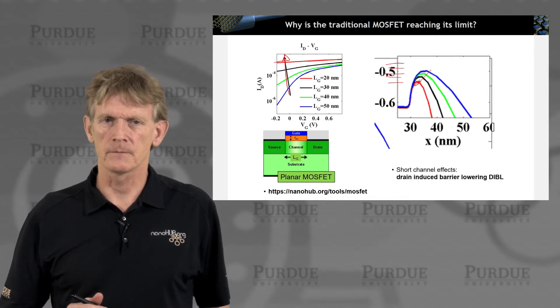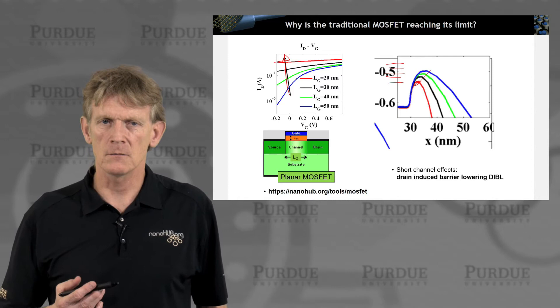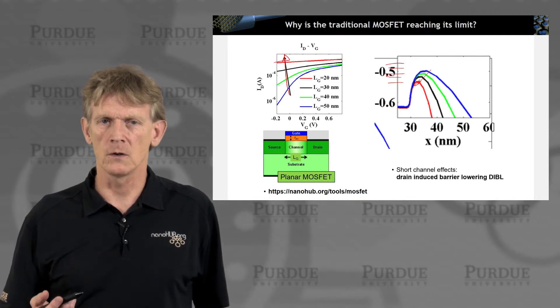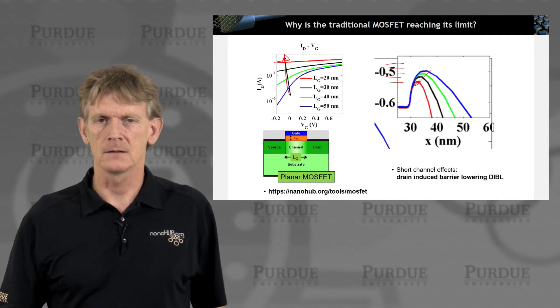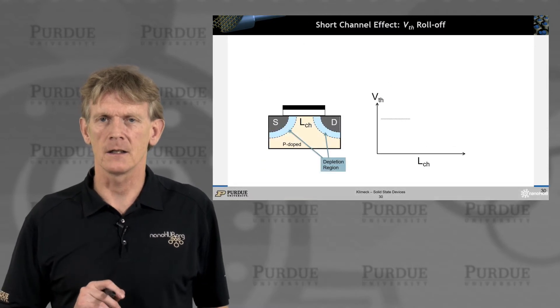This is called drain-induced barrier lowering. What that means is you need better electrostatic control over the channel, and we'll talk about that in a couple of slides down the line.